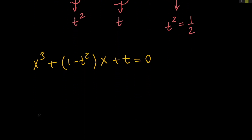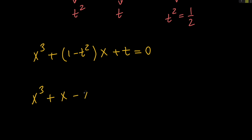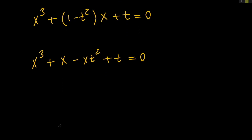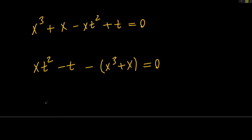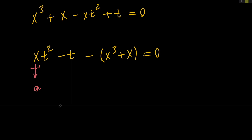So let's go ahead and rewrite this. We have x cubed plus x minus x times t squared plus t equals 0. Next, let's go ahead and negate both sides to get x times t squared minus t minus the quantity x cubed plus x, and the whole thing is equal to 0. By doing all of this, we have a really nice quadratic equation in terms of t. You can see that we have x times t squared minus t minus some other quantity. In this case, the leading coefficient is x, which I call a, b is negative 1, and this is our constant term c.